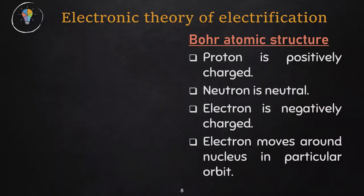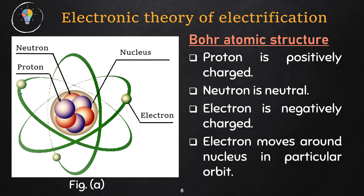The discovery of atomic structure by Rutherford and many other eminent physicists have confirmed that all the materials are formed with atoms, and atoms with three fundamental components. They are proton, neutron, and electron. Every bulk property must be explained with this basic structure of material. So we have to explore electronic theory of electrification.